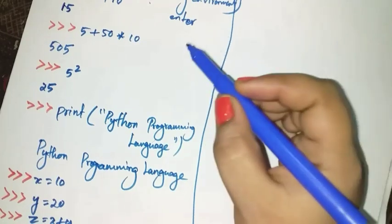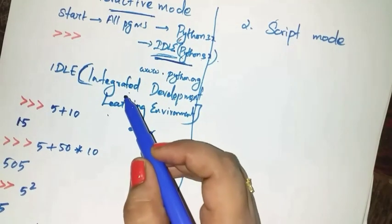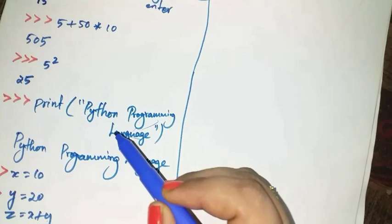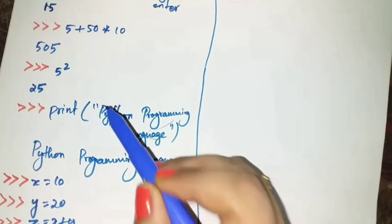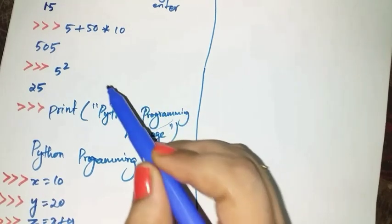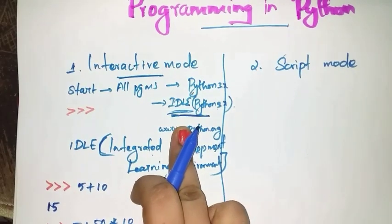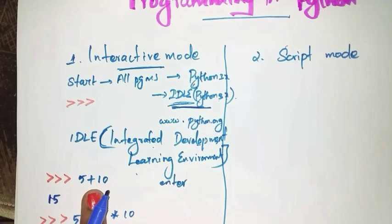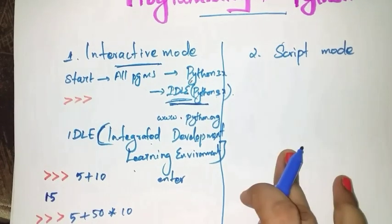If you want to write single line or 4 to 5 lines of code, you can choose interactive mode. But if you want to write long pieces of code, you have to choose script mode. In interactive mode, if any code has errors, you have to rewrite it again. You are not saving your code — you are just writing and getting results immediately. If there are mistakes, you have to rewrite the code again.